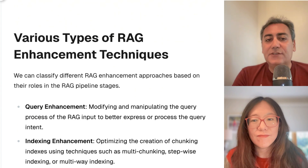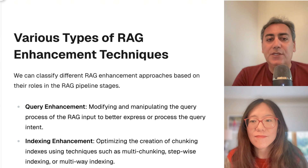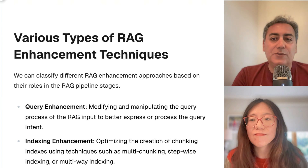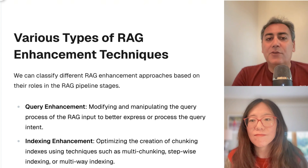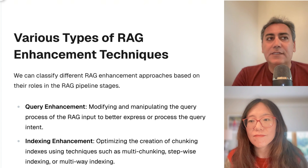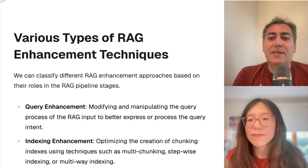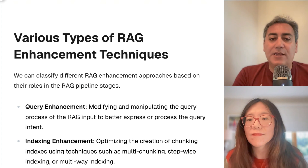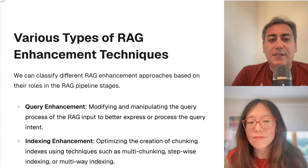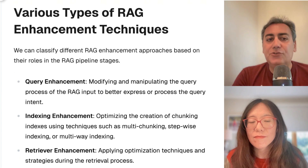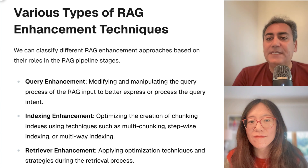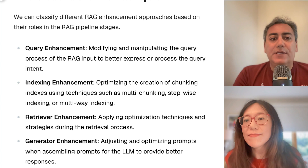There are a lot of techniques introduced over the last couple of years to improve vanilla RAG because there are a lot of issues with it. Just to name a few: when your question is a summarization-type question — like what is this document about — or a comparison question where you want to compare multiple things against each other, vanilla RAG fails to answer them. There are several other issues as well, and researchers have introduced different types of RAG improvement techniques that we are going to cover here.